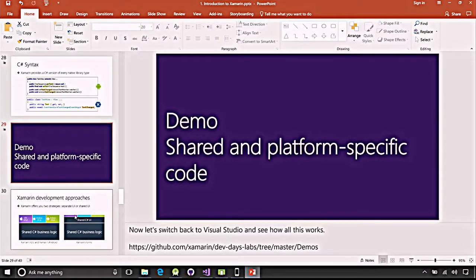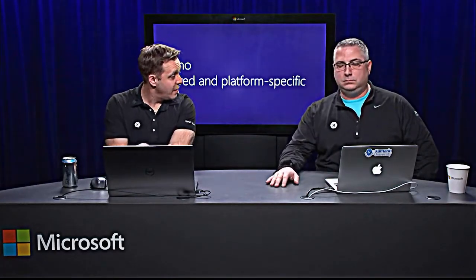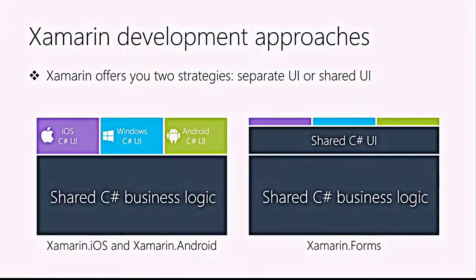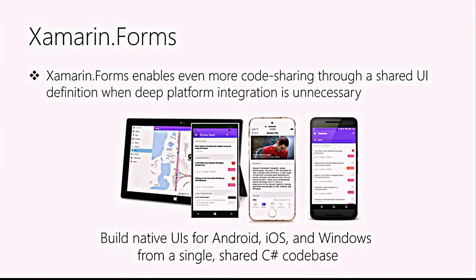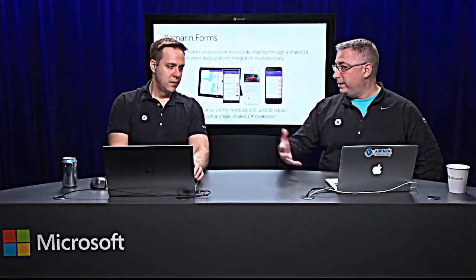What if we want to share our UI definitions as well? Xamarin has a solution for that — Xamarin.Forms. Not only do we share business logic but also the UI definition. We lay out our pages and controls using a single shared code base, and have that run on iOS, Android, and Windows. This takes code sharing from 75% all the way up to 90-95%, while still retaining native applications. We're not interpreting or running things at runtime — we are creating native applications but sharing more and more code.